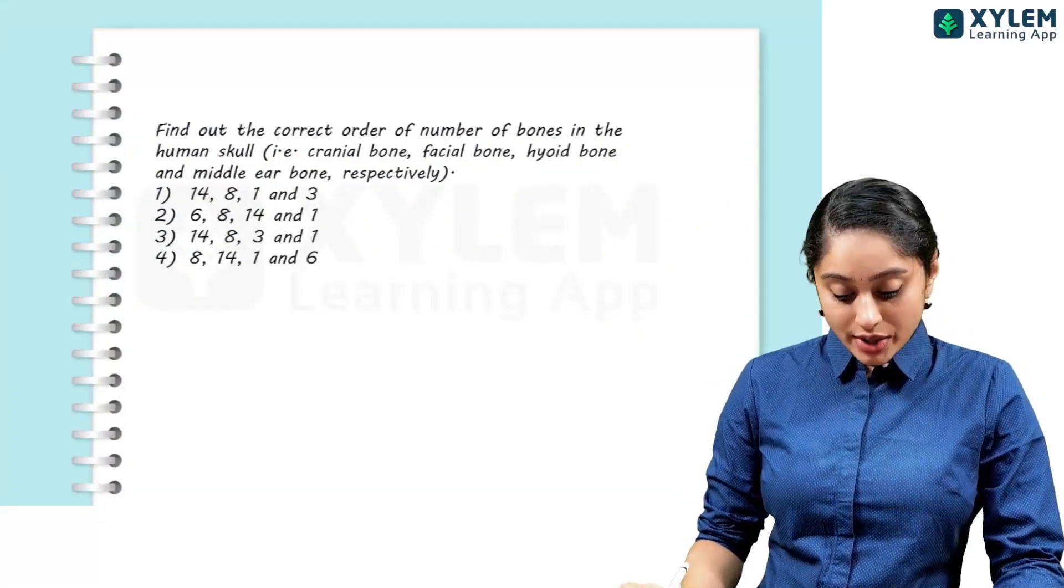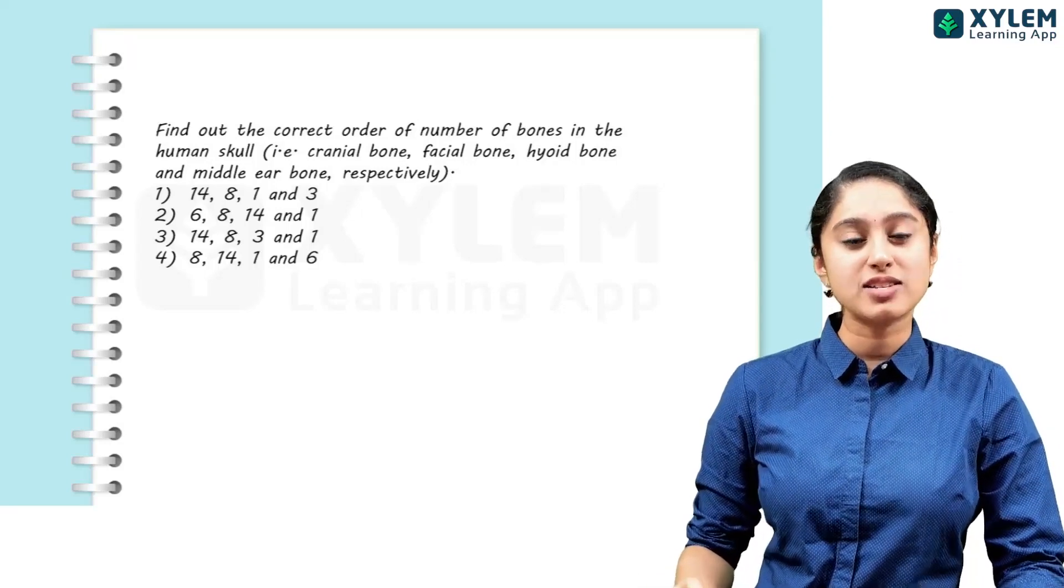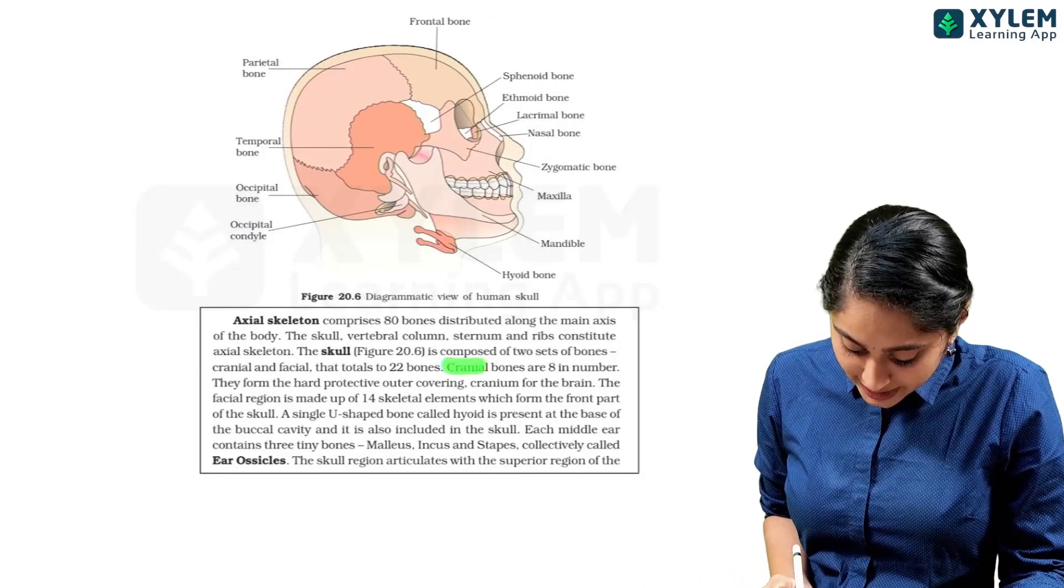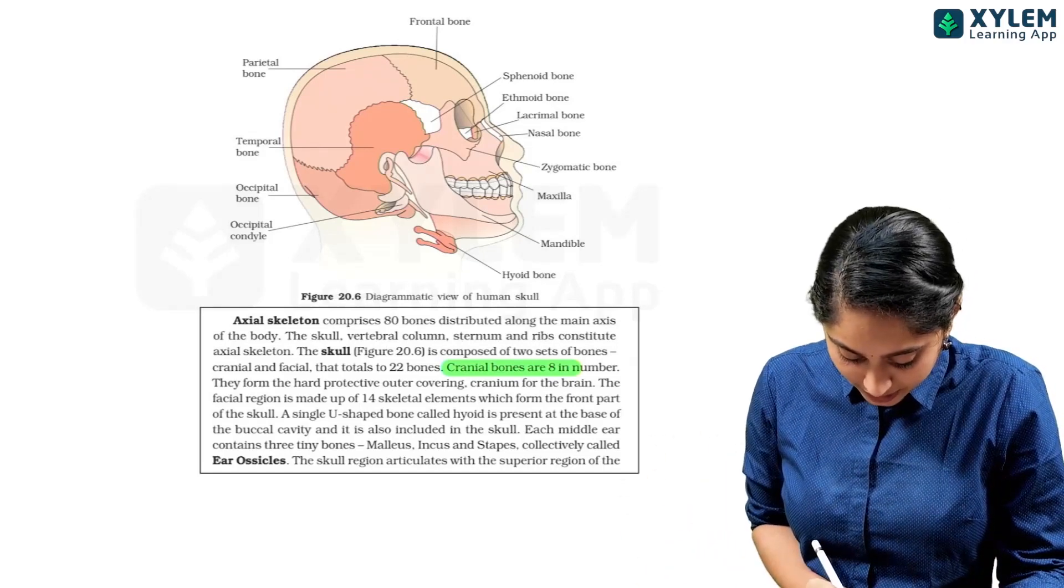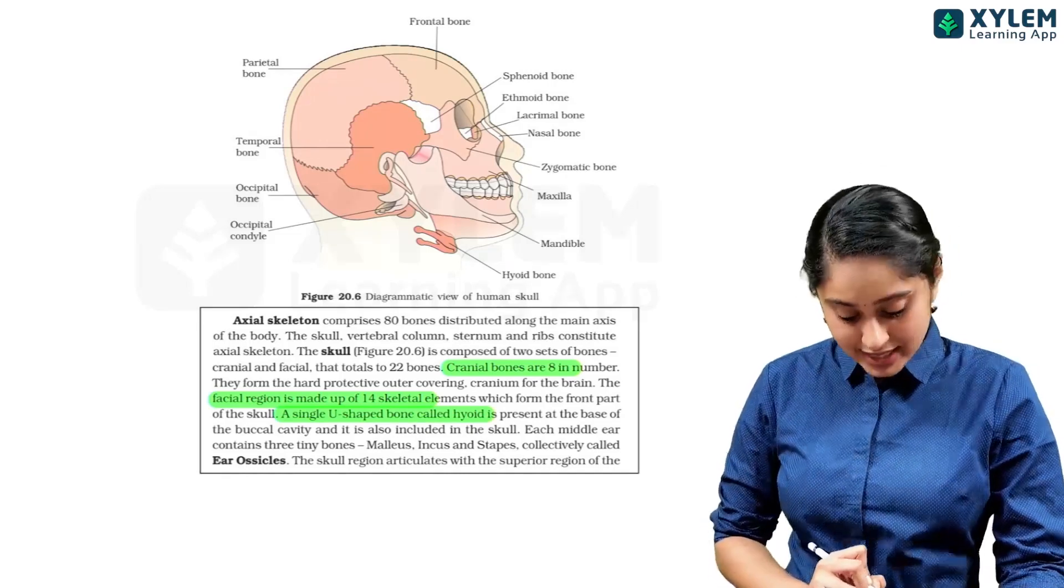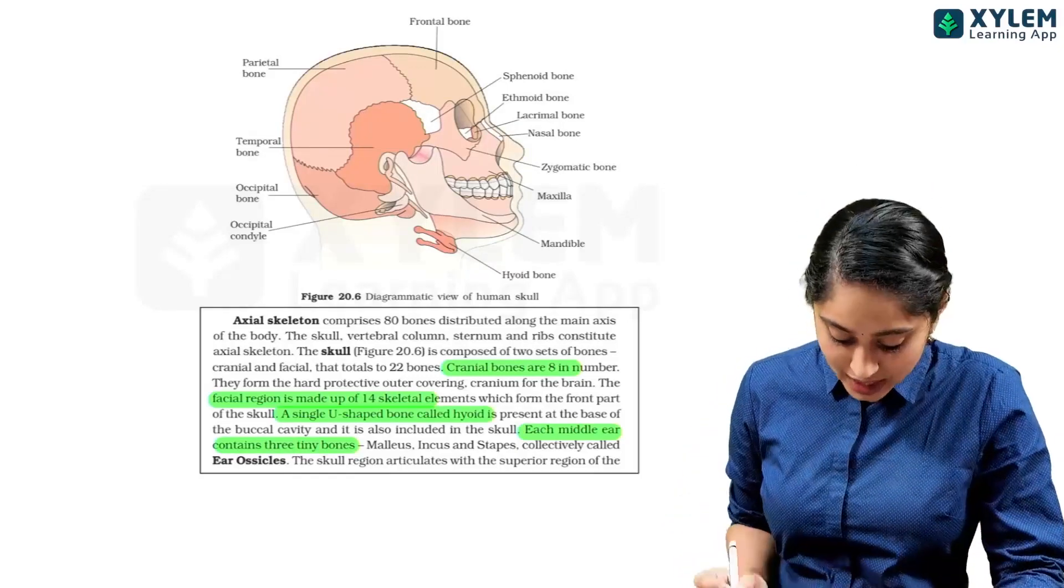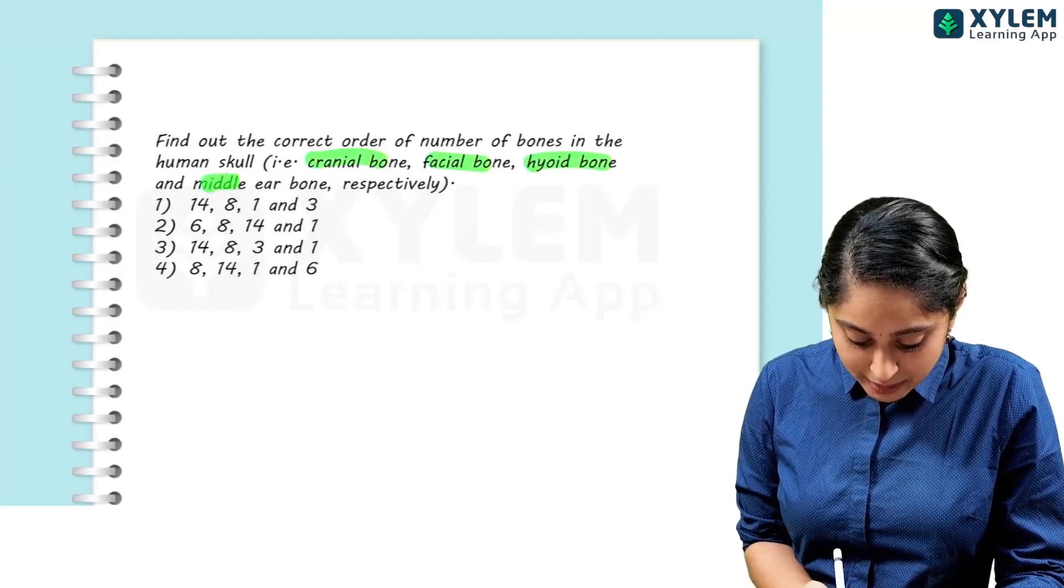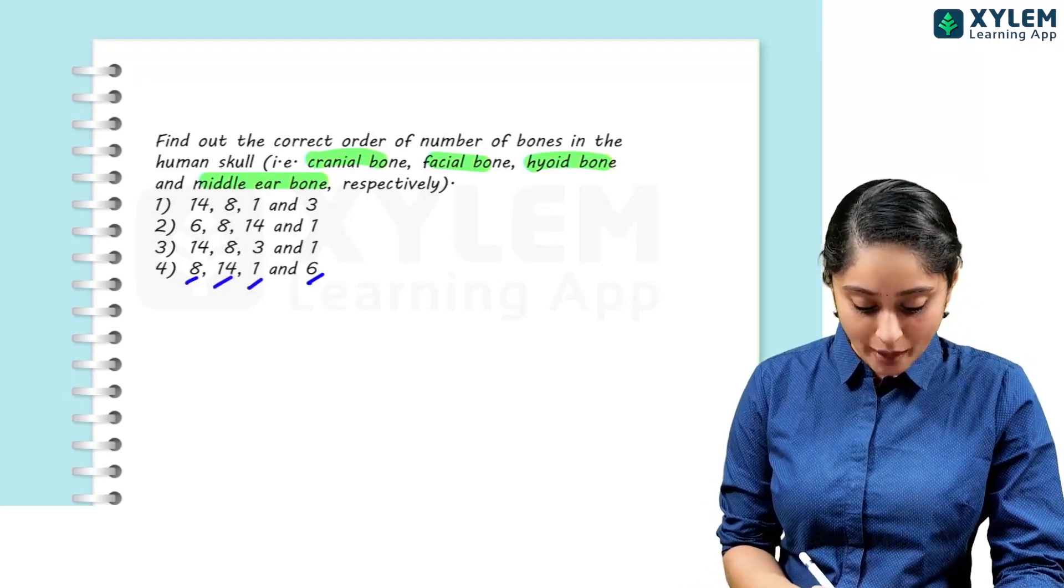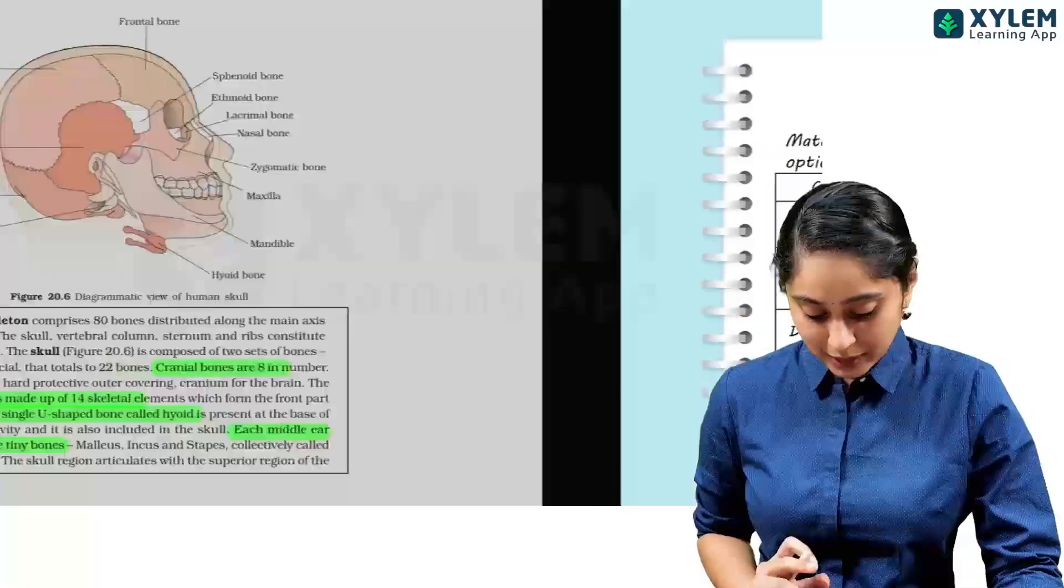Find out the correct order of number of bones in the human skull: cranial bone, facial bone, hyoid bone and middle ear bone. This section is very important for match the following questions. If you see here, cranial bones that fuse to form the entire cranium, and then facial region we have 14 skeletal elements. And then one single U-shaped hyoid bone is present, and each middle ear has 3 tiny bones. So if there are 2, that's why 3 plus 3, 6 will be the answer. So cranial, facial, hyoid and middle ear - in the order, cranial 8, facial 14, hyoid 1 and middle ear 6. That's why option 4 will be the right answer.